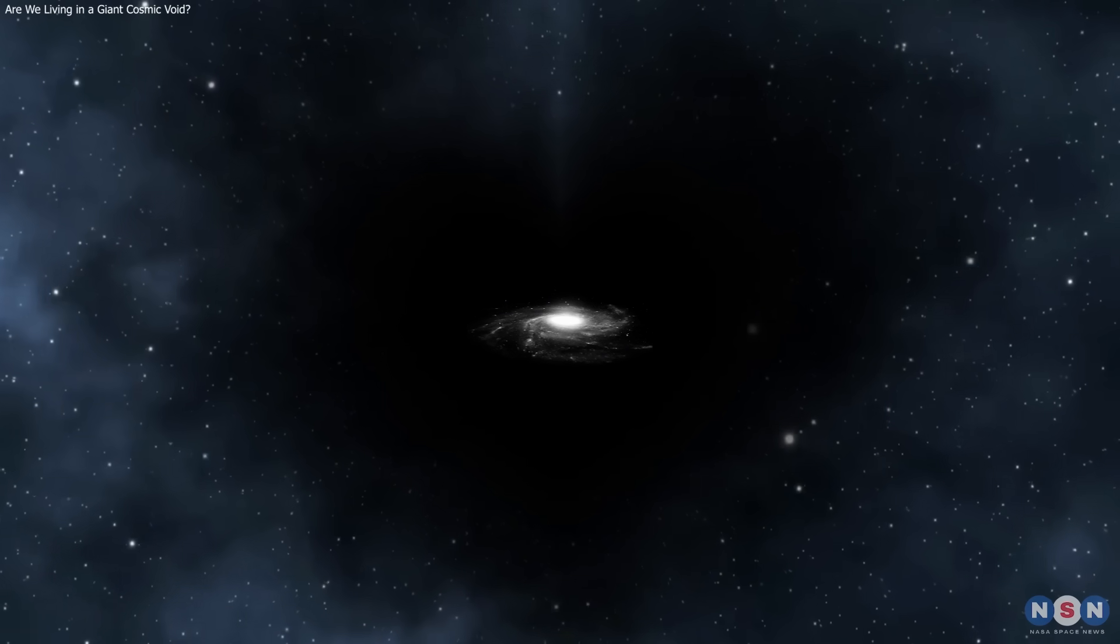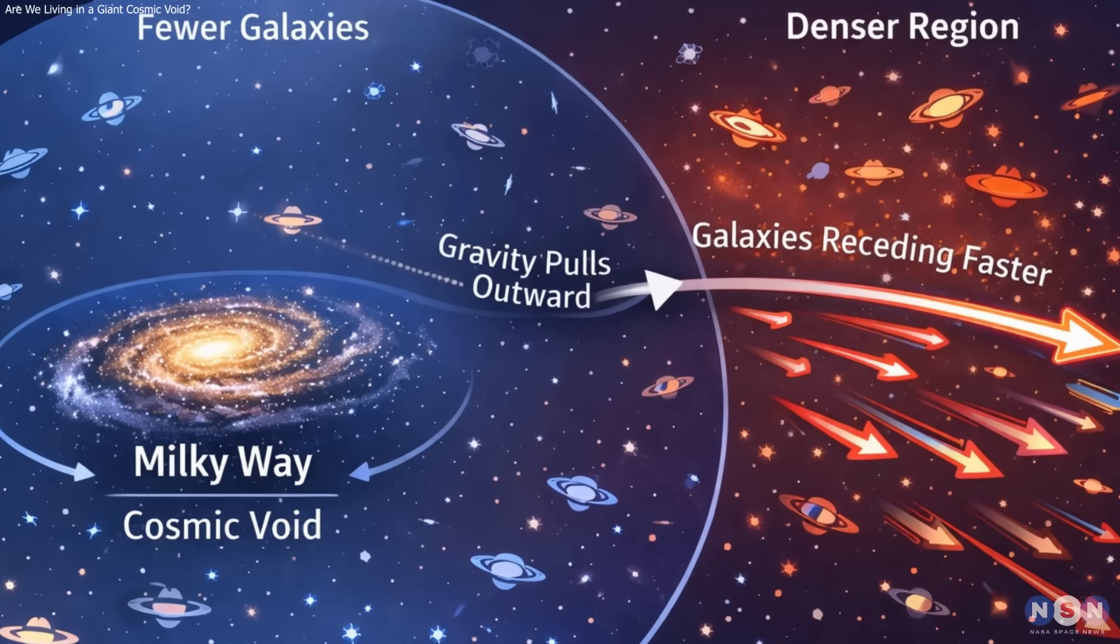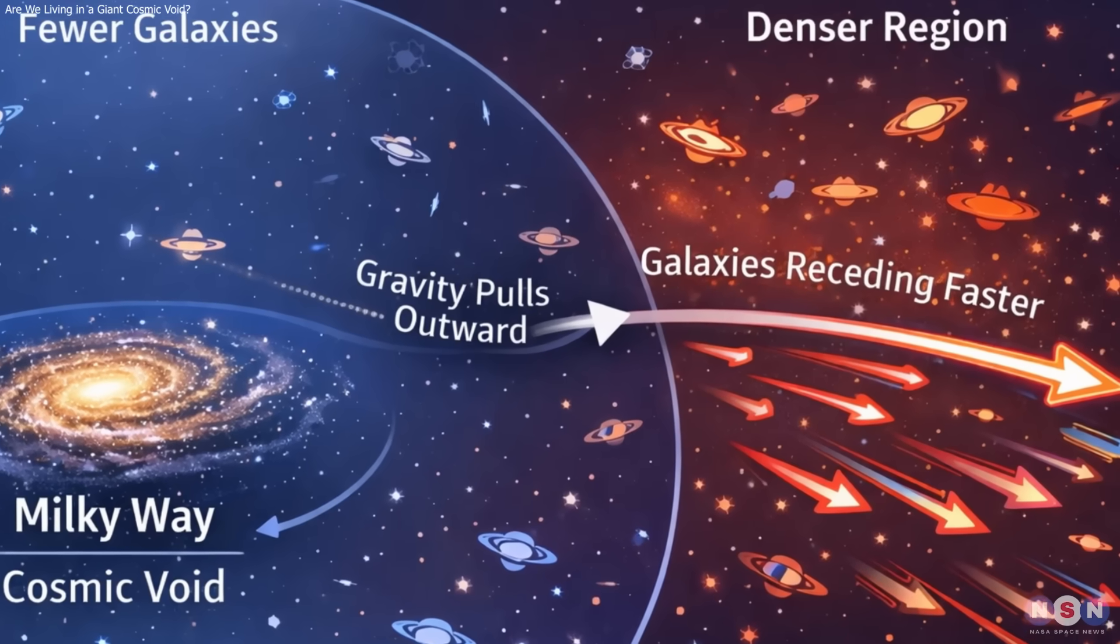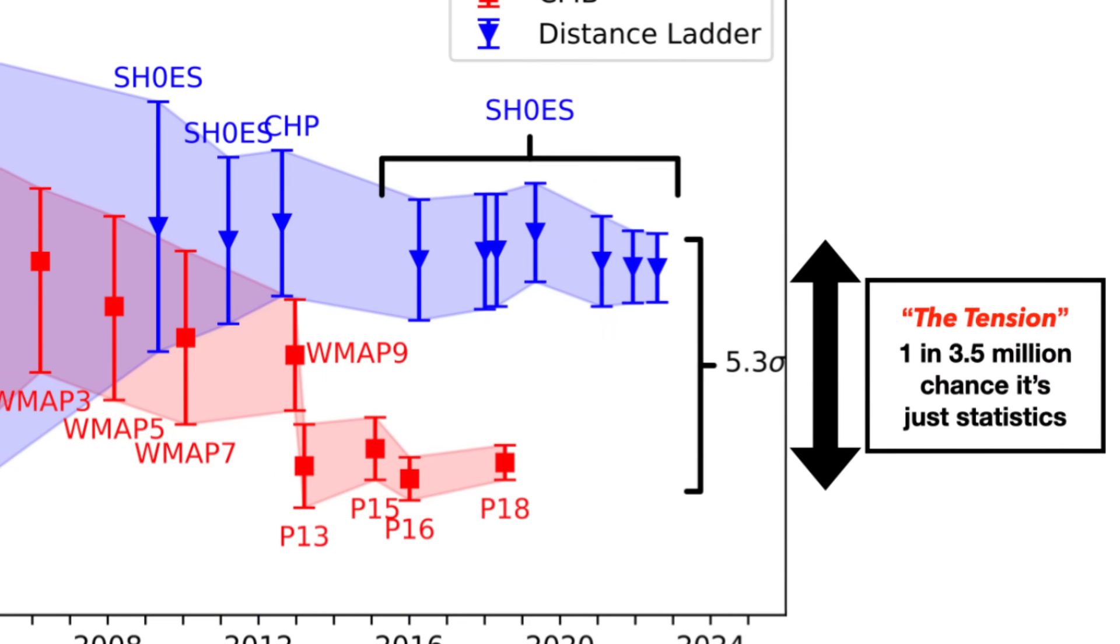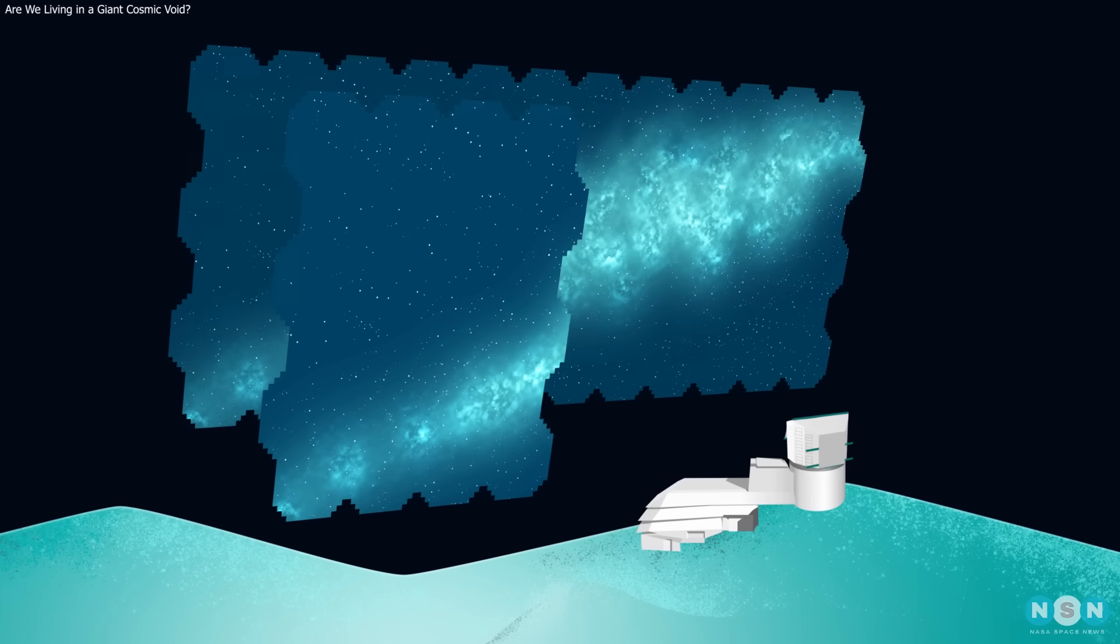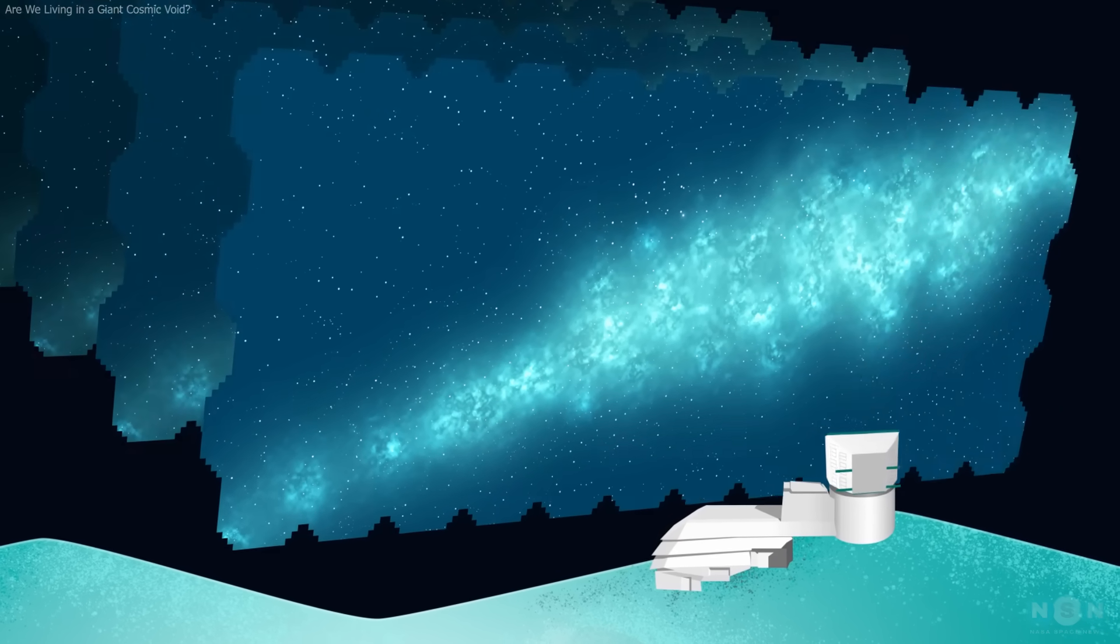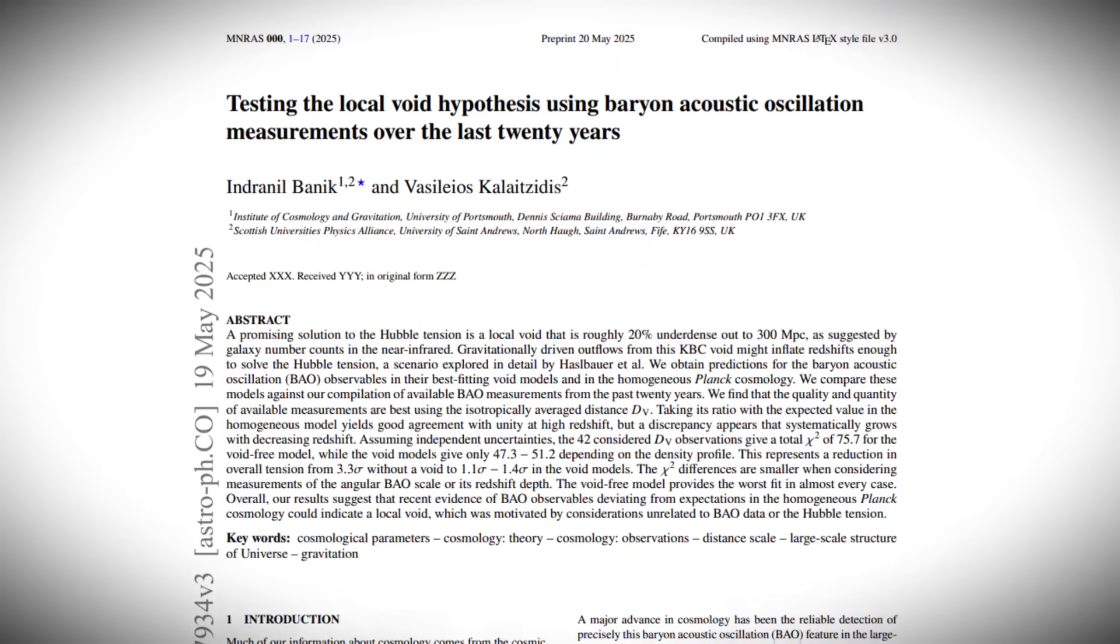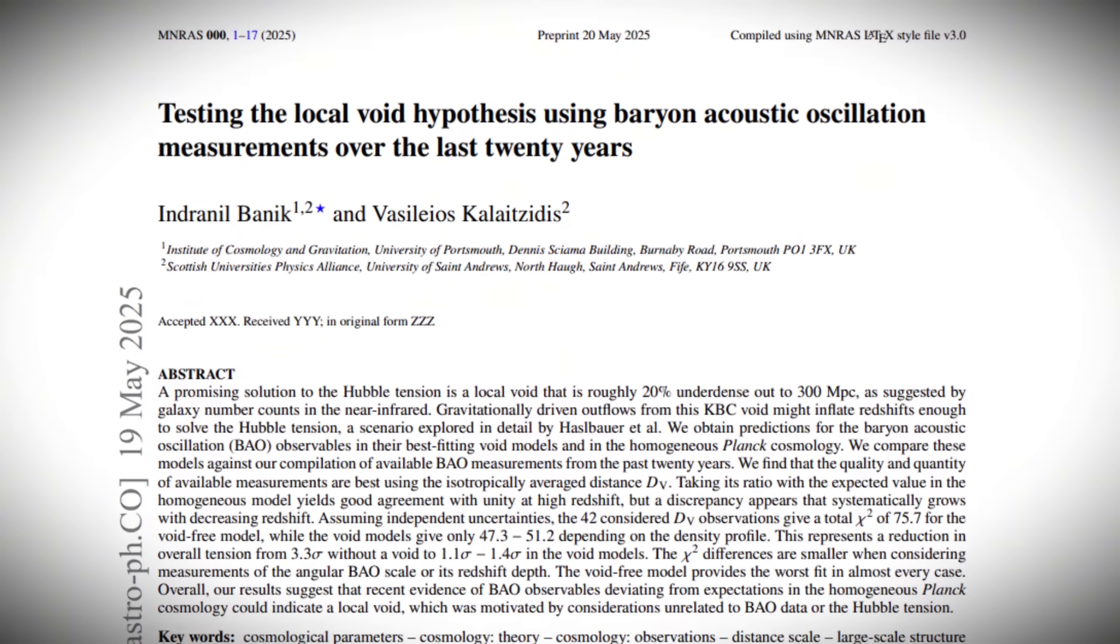New evidence suggests our galaxy may lie inside a large cosmic void, affecting how we measure the universe's expansion. If confirmed, this could explain the Hubble tension without changing fundamental physics. Upcoming observations will determine whether this picture holds or needs to be revised.